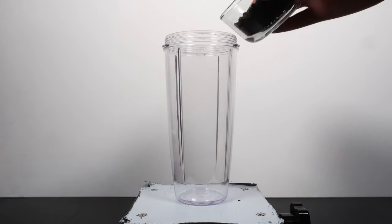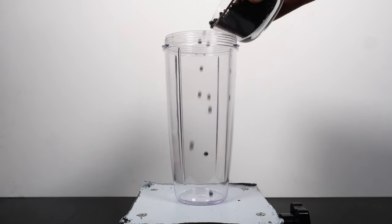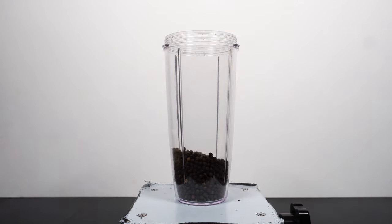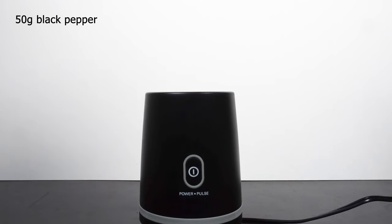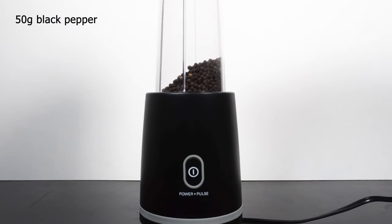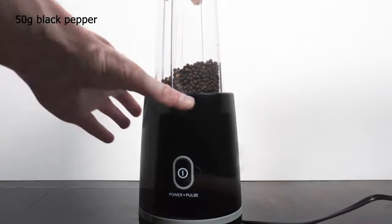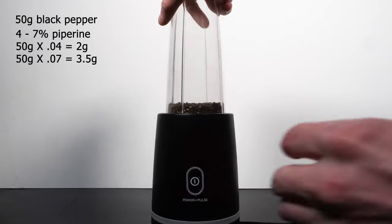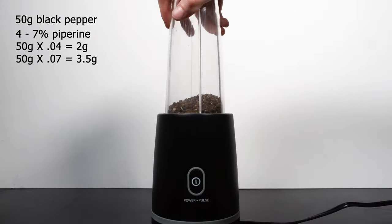The first thing we'll need to do is grind our black pepper down into finer pieces. This increases the surface area and the extraction rate. For this project, I'm using 50 grams of black pepper, and in theory, this contains anywhere from 4-7% piperine, so we should end up with about 2.5 grams of piperine if all goes as planned.